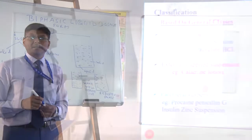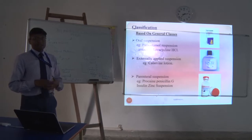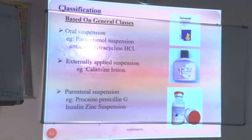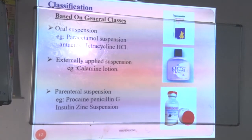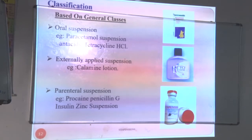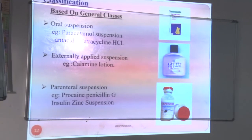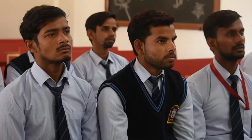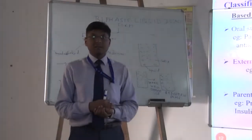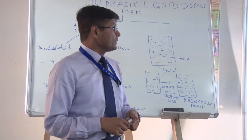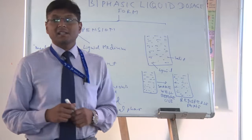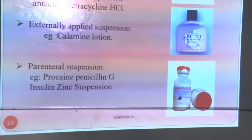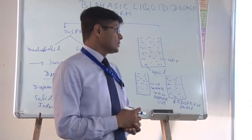Now we come to the classification of suspension. Based on general use, there are three types: oral suspension, externally applied suspension, and parenteral suspension. Common oral suspensions include paracetamol, antacid, and tetracycline hydrochloride. Externally applied suspension — calamine lotion is a good example, as it is itself a suspension dosage form used externally. Parenteral suspensions are used for injection; many antibiotics are available as nanosuspensions administered to the patient, such as procaine penicillin G and insulin zinc suspension.